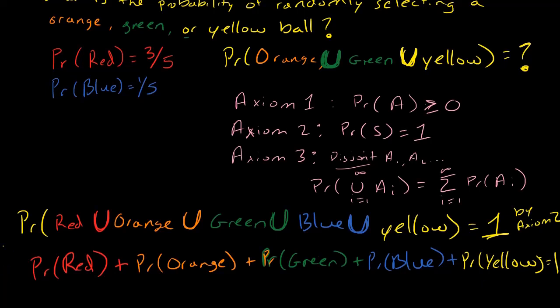The second step is by axiom 3. So we have disjoint events, and we're able to break it up like this. We know some of these things. We know what the probability of red is, and we know what the probability of blue is. So let's plug those in.